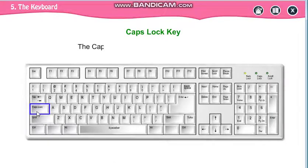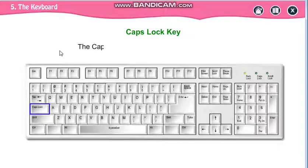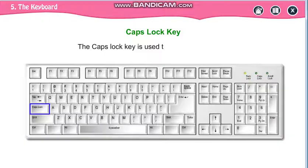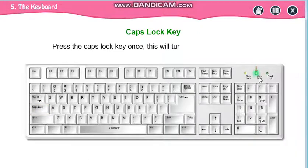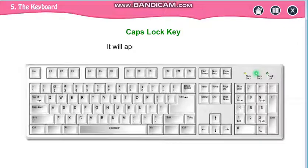Now the caps lock key. The spelling is C-A-P-S — 'caps' is short for capital letters. So if you want to type in capital letters, you use the caps lock key. When you press the caps lock key, a green light turns on. It is used to type in capital letters. Press caps lock, the light turns on, type the text. If you want to turn it off, press caps lock again — the light turns off and you go back to typing in small letters.